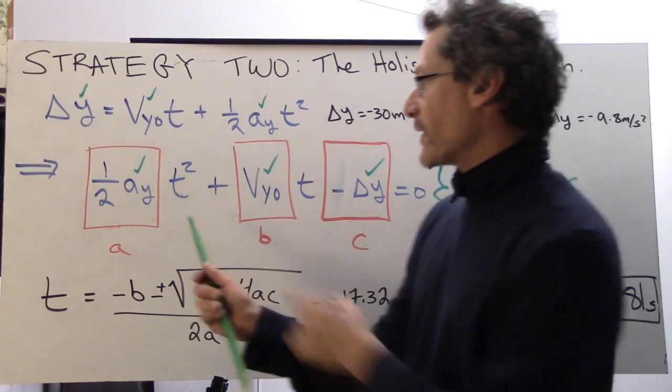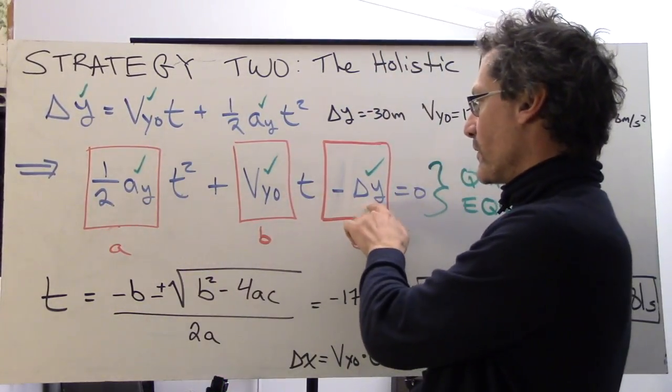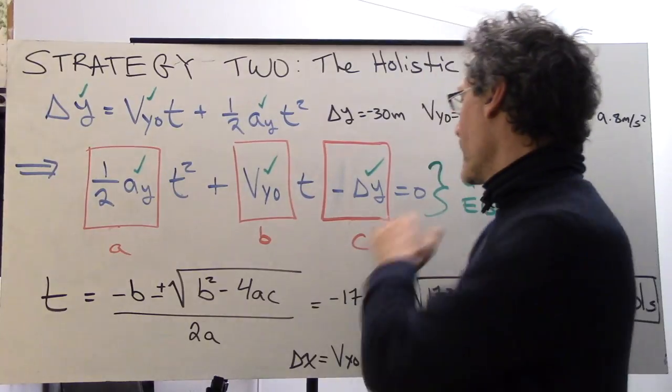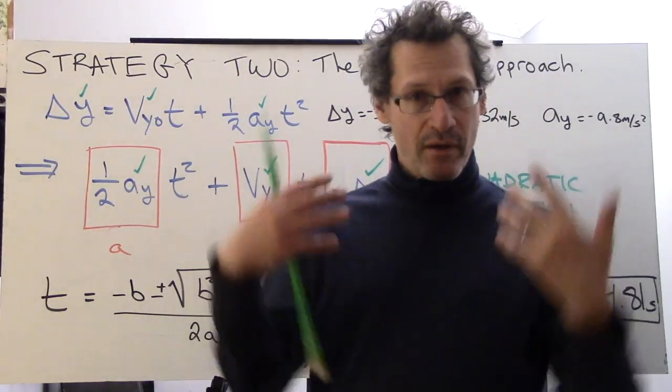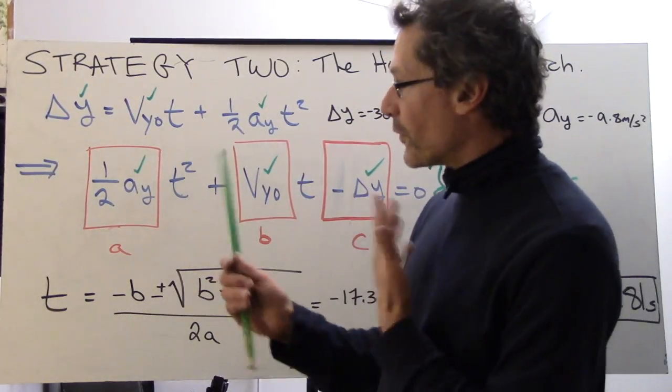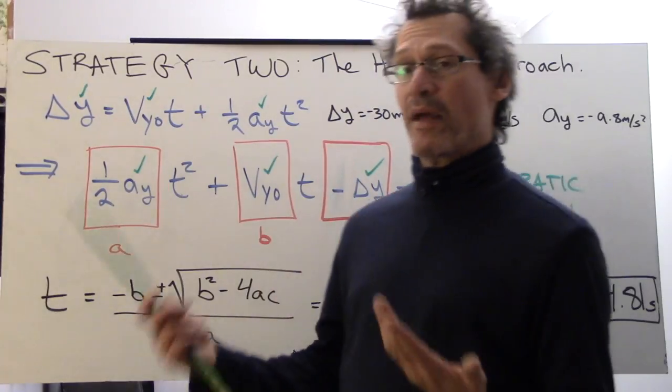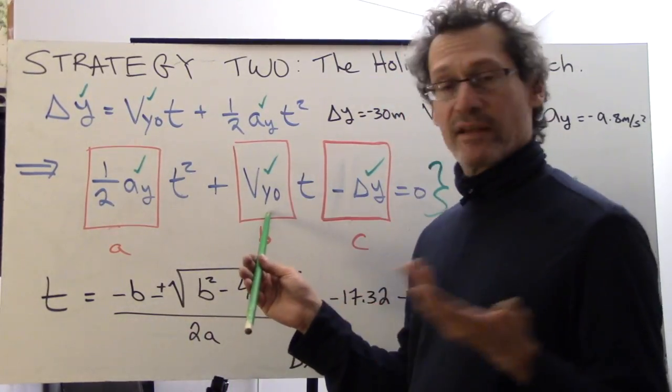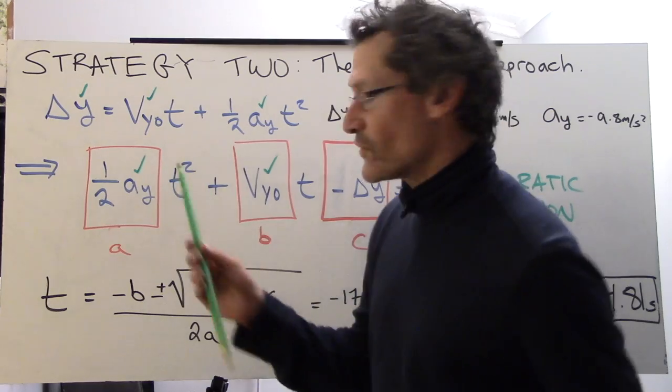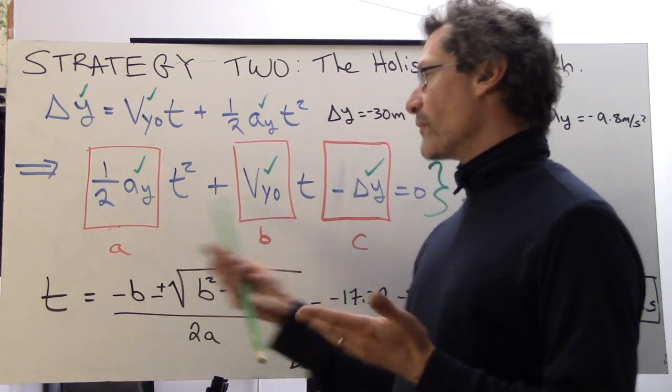Before, we really can't solve this in a normal method because most of the time we've had v y naught equals zero, so this term goes away. We solve for t squared, we do a square root. Beautiful. We can't do that when we have both these terms. But now we can. We've always had this in our bag of tricks, the quadratic equation. We just never needed to use it, but in this case it's going to be pretty useful.